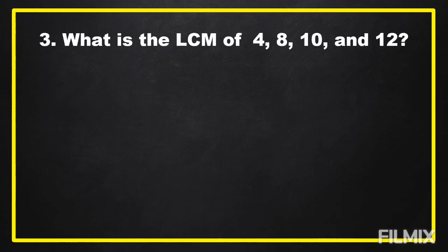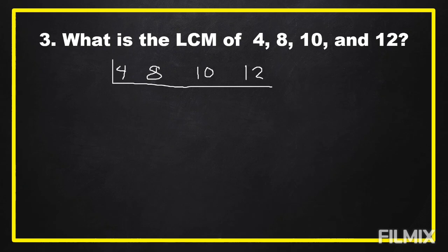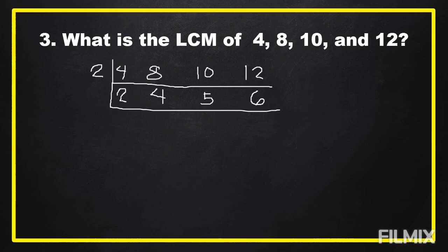Next example: what is the LCM of 4, 8, 10, and 12? We write these numbers in a horizontal line: 4, 8, 10, and 12. The common prime divisor is 2. Four divided by 2 equals 2, eight divided by 2 equals 4, ten divided by 2 equals 5, and twelve divided by 2 equals 6. Checking 2, 4, 5, and 6: for three of them — 2, 4, and 6 — these are divisible by 2. So 2 divided by 2 equals 1, four divided by 2 equals 2, bring down 5, and six divided by 2 equals 3. Now we have 1, 2, 5, and 3.